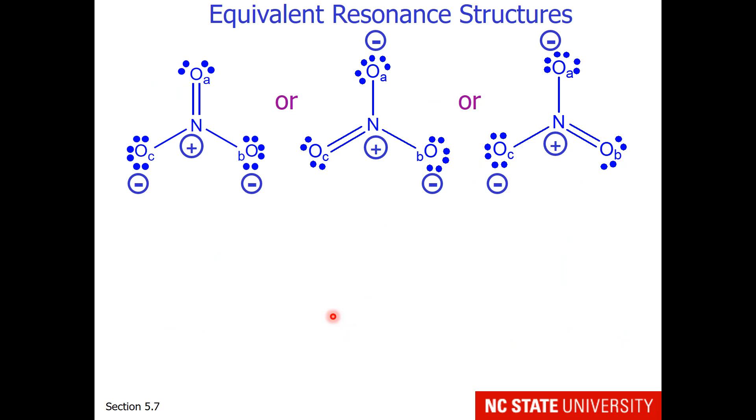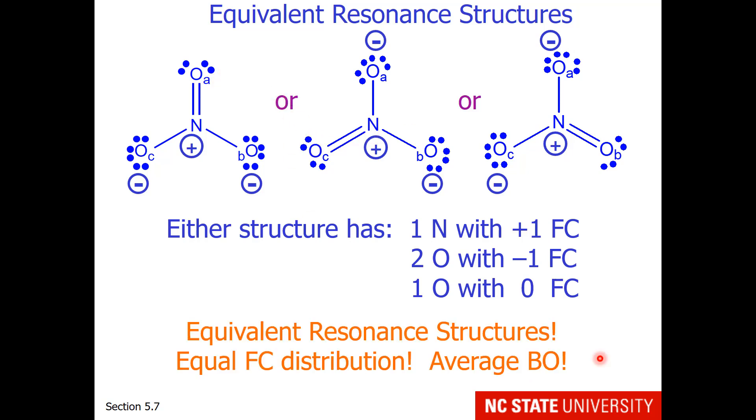So these are equivalent resonance structures also by formal charge. Each structure has a nitrogen in the middle with plus one formal charge. Each structure has two oxygens with minus one formal charge. And each structure has one oxygen with zero formal charge. So when you have equivalent resonance structures, which means one has an equal formal charge distribution, average the bond order.